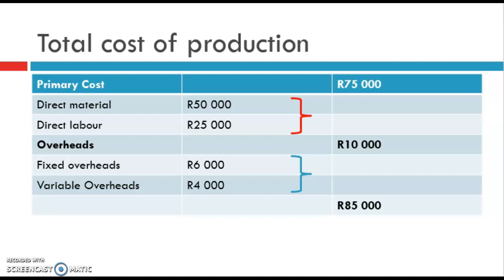We're now going to look at some calculations. We get what we call a total cost of production. The first thing is primary costs. These are to do with direct material — the actual raw materials used in production, like cotton and fabric for a sheet. Direct labor is the staff actively working on making that product, not the accountant or receptionist — the people directly involved. In this example, direct material is 50,000 Rand and direct labor is 25,000 Rand, giving a combined primary cost of 75,000 Rand.